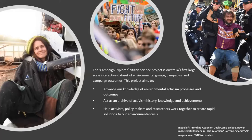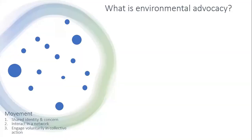But how can we actually apply citizen science to environmental groups, activities and outcomes? We need to look at the data points which can be acquired and tracked through this project. This slide explains both the structure of the environmental movement and the data collected for the Campaign Explorer — we can see how social science topics can map onto a citizen science project. First, we have a movement. The boundaries of a social or environmental movement are very broad and hard to define, but we can work from a definition. A movement has three characteristics: it is composed of individuals with a shared identity and concern who interact in a network and engage voluntarily in collective action.